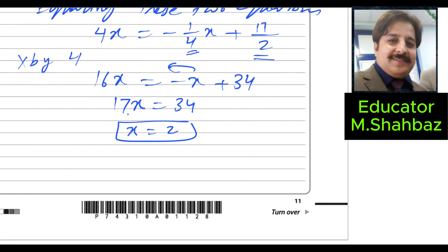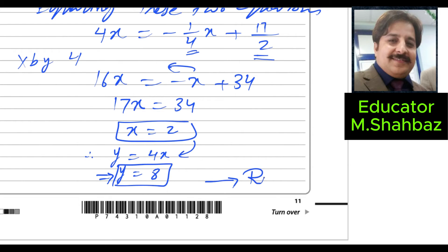Dividing both sides by 17 gives x = 2. Substituting back into y = 4x: y = 4 × 2 = 8. Therefore the coordinates of point R are (2, 8).